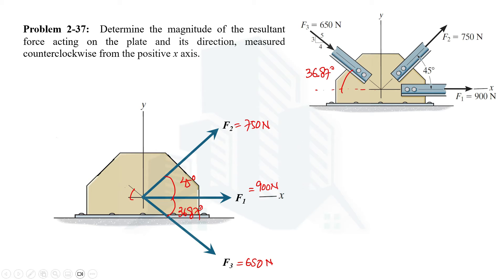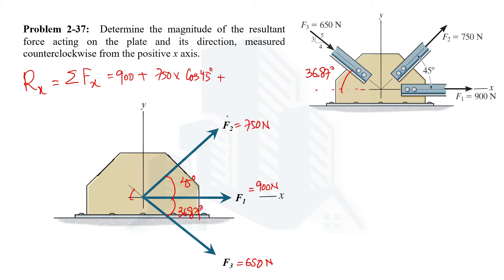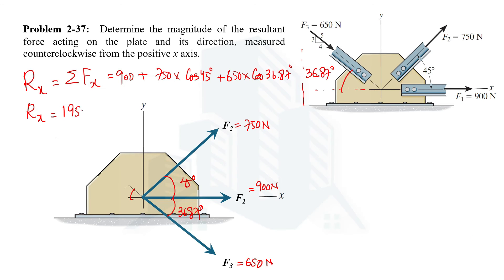We need to determine the x and y components of all forces. The x-component of the resultant force equals the summation of x-components of all forces. The x-component of F1 is 900 × cos 0° = 900 N, the x-component of F2 is 750 × cos 45°, and the x-component of F3 is 650 × cos 36.87°. Adding all these gives the x-component of the resultant force as 1950.33 N.